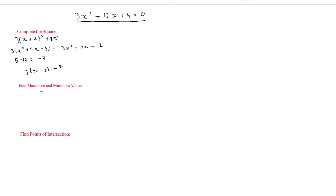If we want to sketch the graph we need to find the minimum value — there's no maximum value because it's an x squared function, so it opens upward. The minimum value is at x equals minus 2 and y equals minus 7. You get minus 2 because x plus 2 equals zero means x is minus 2, and y comes from the constant term outside the bracket, which is minus 7.